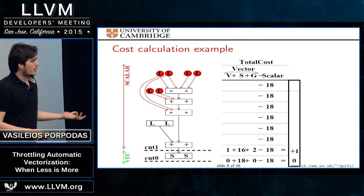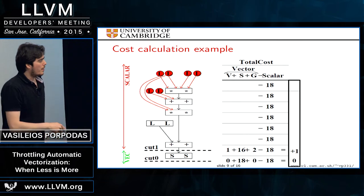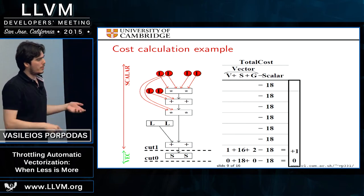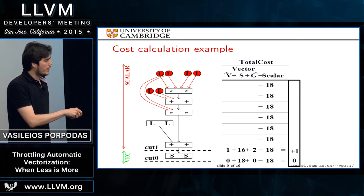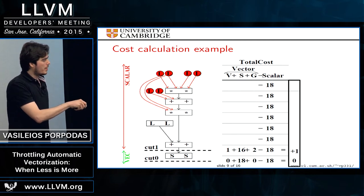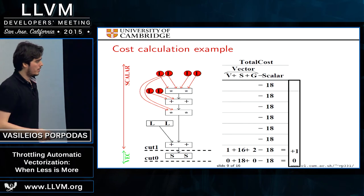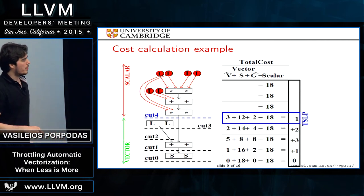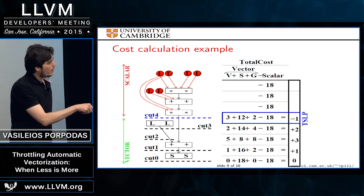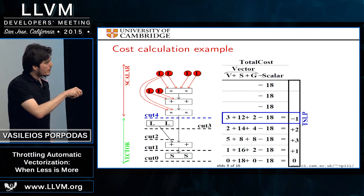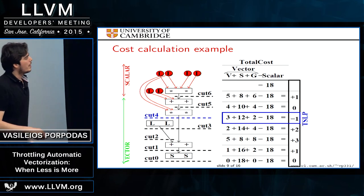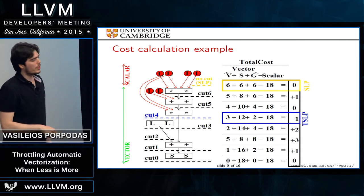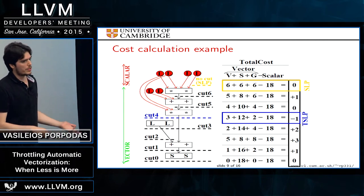Cutting the graph at the stores edge gives one vector instruction, 16 scalars above the cut, plus two insert instructions to bring scalar values into vector registers, minus 18 — yielding a small cost. The sweet spot that TSLP finds is a cut giving a cost of minus one, meaning vectorizable code. By contrast, letting the vectorizer go all the way gives a cost of zero — so vanilla SLP would not vectorize the code, while TSLP will.